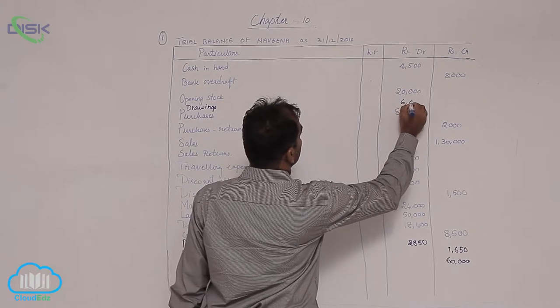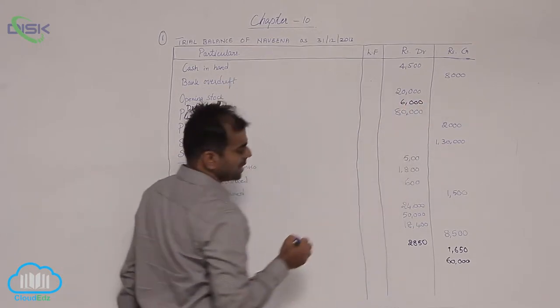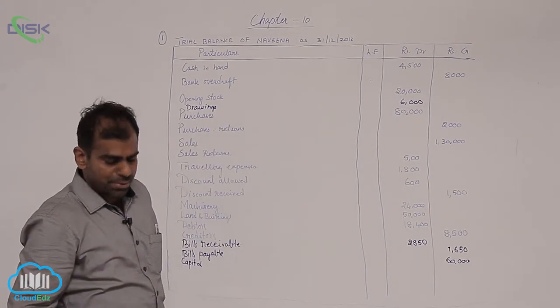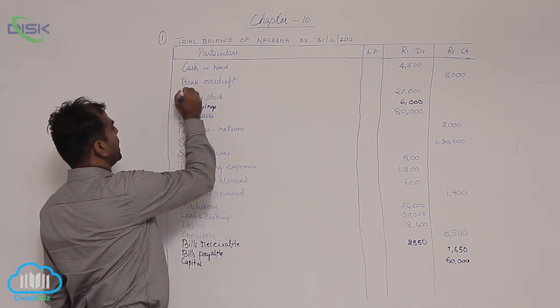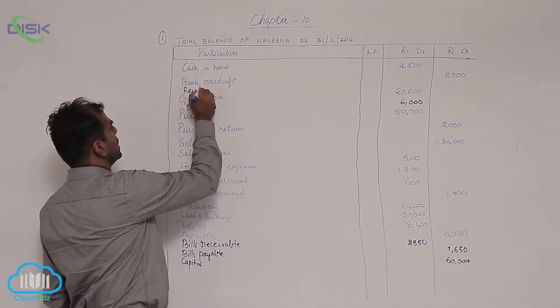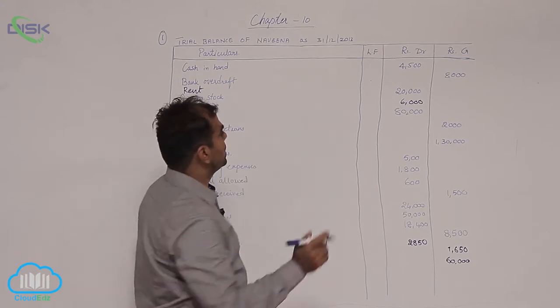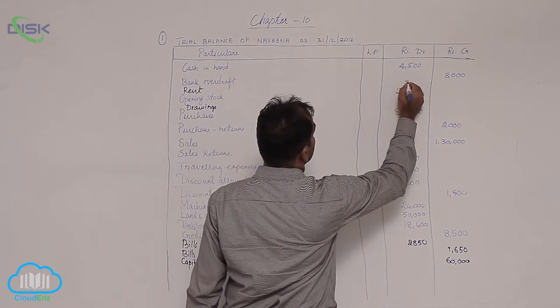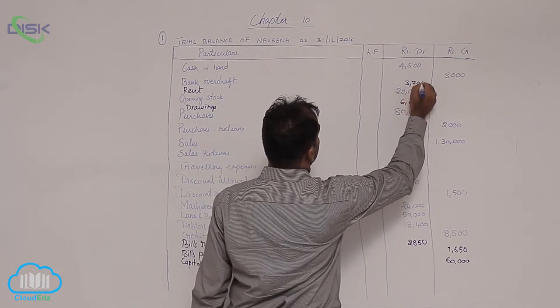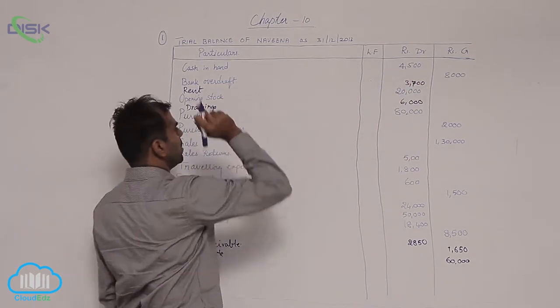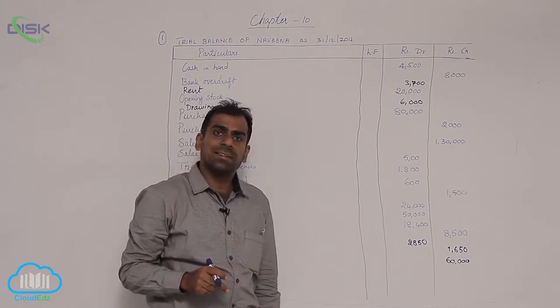Next is your rent. So rent, again an expense, shows debit balance. Rent is around 3,700. Why did we consider it as expense? Because we already discussed when nothing is stated about a nominal account, we consider it as an expense.